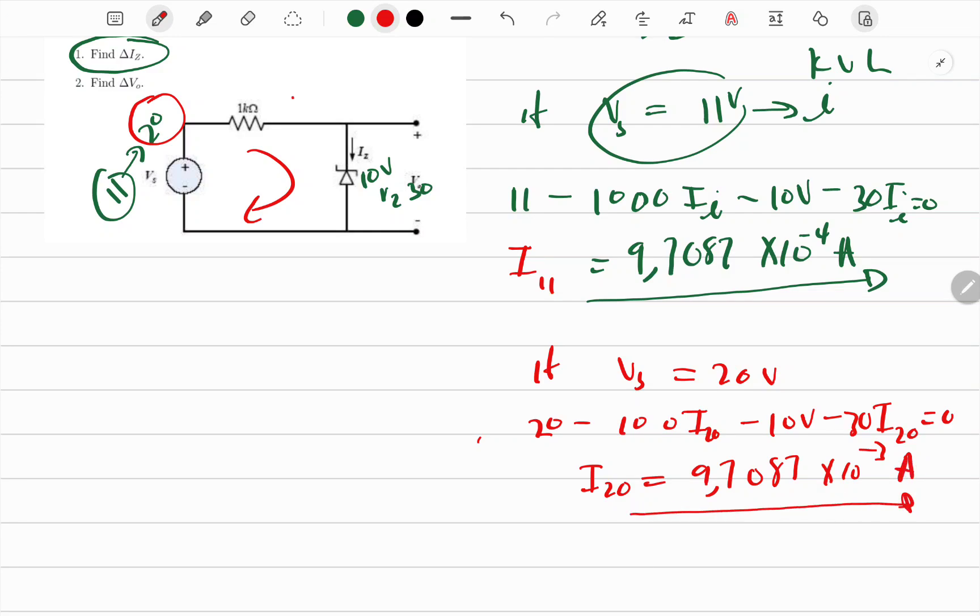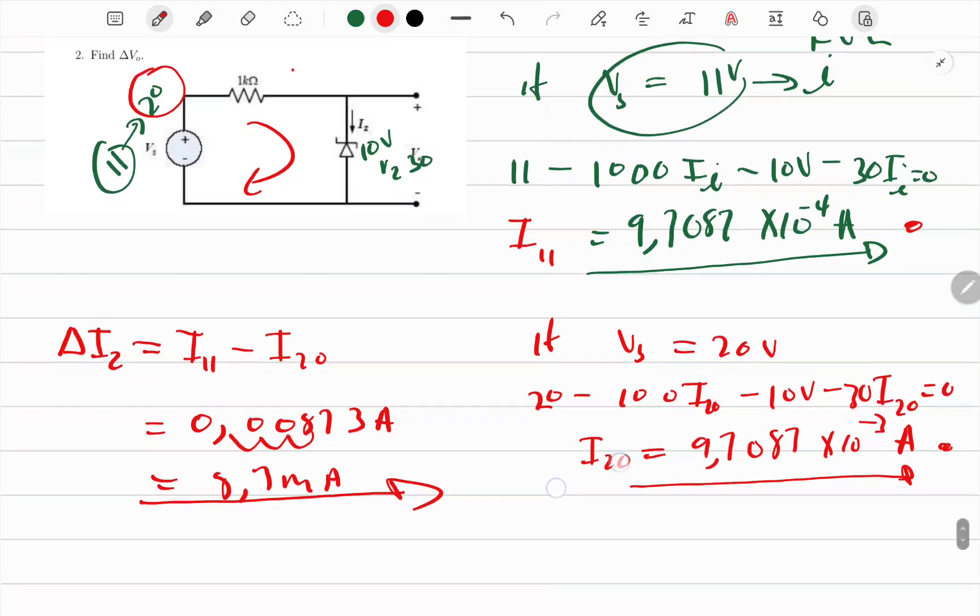Then because they wanted that difference in current, I can say my different in current on the Zener diode can be current when it was 20 minus current when it was 11. And if you put that in your calculator, it's going to be this minus this and then you get an answer. After punching I get an answer of 0.000873 amperes. You can just move your comma one, two, three and make it 8.73 milliamperes. So this is your answer.